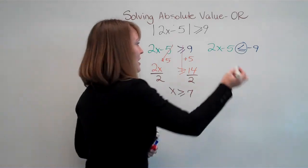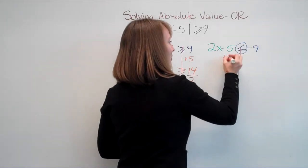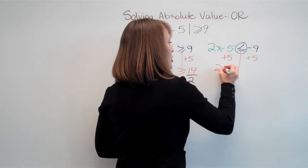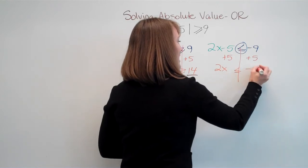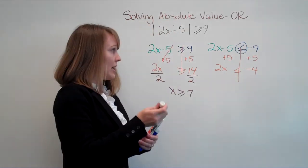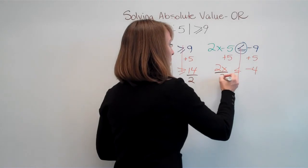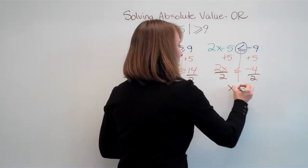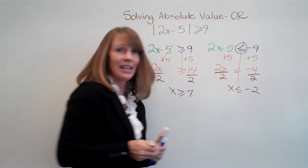Same thing on the other side. So we're going to add 5 to both sides. We get 2x is less than or equal to negative 4. And we're going to divide both sides by 2 to get x is less than or equal to negative 2.